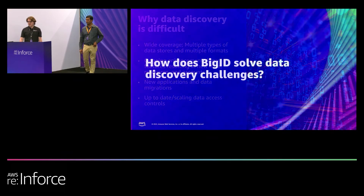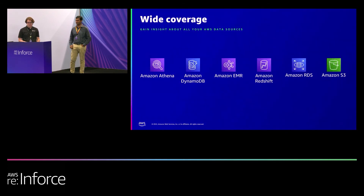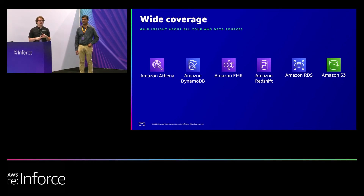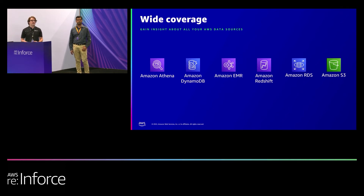BigID is going to solve each of these challenges. BigID is able to scan and classify all of your different types of data, whether that's AWS data, on-prem data, or even mainframe data. We support the wide gamut of AWS services, as well as anything you have on-prem, in Azure, in GCP — whatever kind of data you have in whatever format, unstructured or structured.